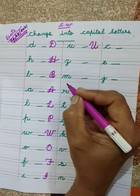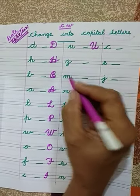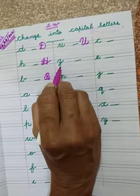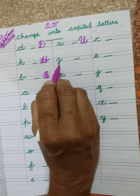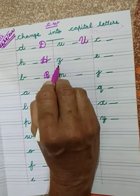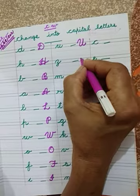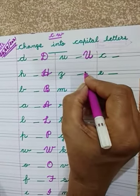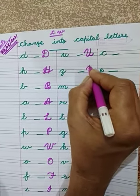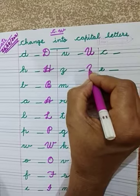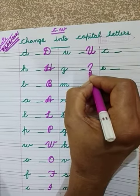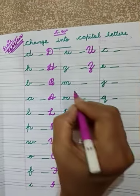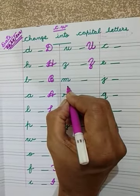Cursive Capital letter U. Tell me children, which letter is this? Very good — Cursive Small letter Z. Then we have to write here Cursive Small letter Z. Start from the second line. This is Cursive Capital letter Z.